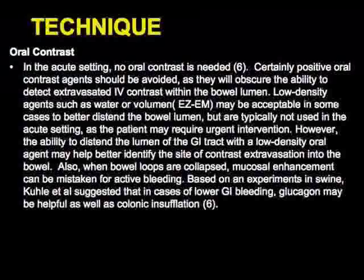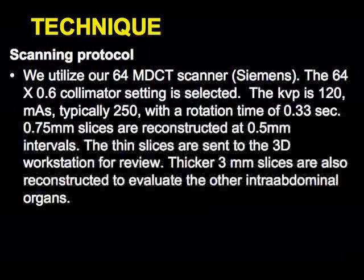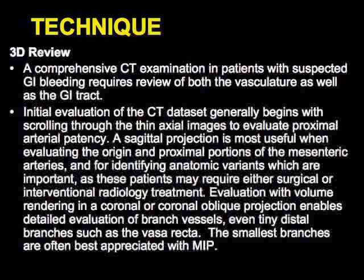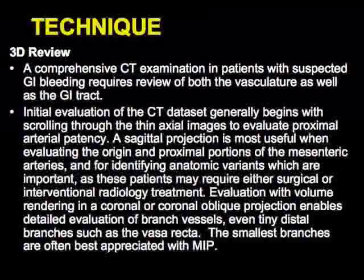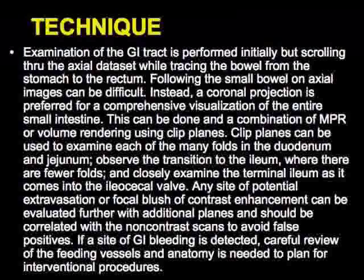Our technique uses 0.75 mm thick sections from a scanner with 0.6 mm detectors and 0.5 mm reconstruction with overlap, yielding well over a thousand images for the abdomen. We reconstruct everything for 3D review. I scroll through coronals and sagittals mainly for the proximal celiac and SMA, then use a combination of volume rendering and MIP. Volume rendering shows soft tissue and vascularity; MIP is a projection technique used to find very bright areas indicating bleeding.